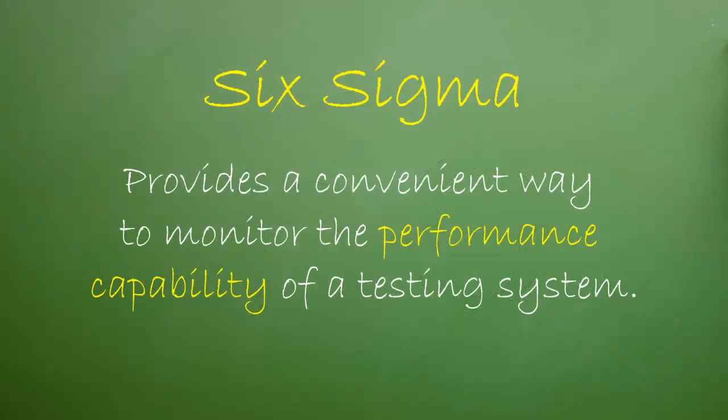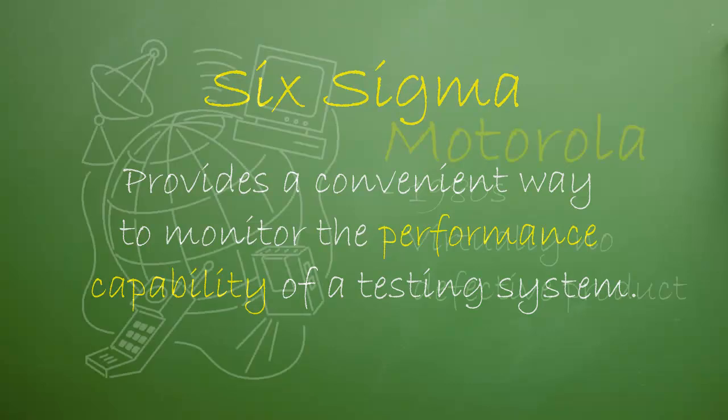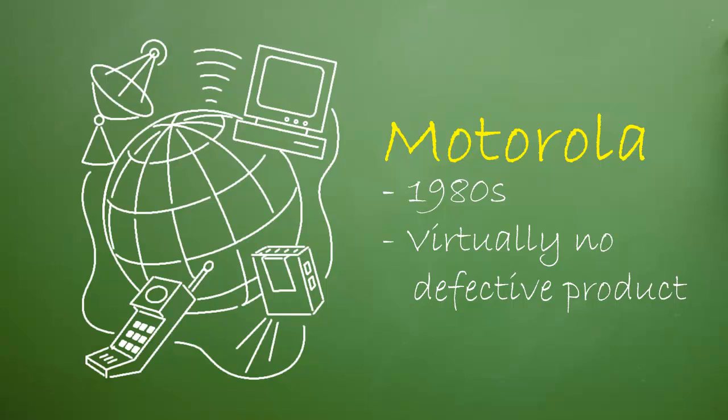Six Sigma provides a convenient way to monitor the performance capability of a testing system. During the 1980s, Motorola set out to improve their manufacturing process so that virtually no defective products would be produced. Their process laid the groundwork that industry and clinical laboratories would follow.